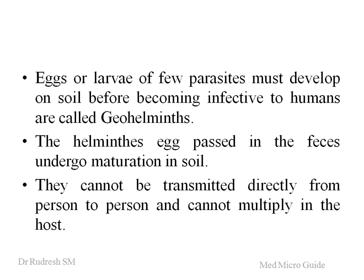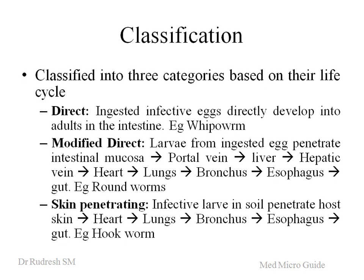Usually they are classified into three categories based on their life cycle. One is the direct method of life cycle, that is the ingestion of the infective eggs directly — they develop into adult worms in the intestine.